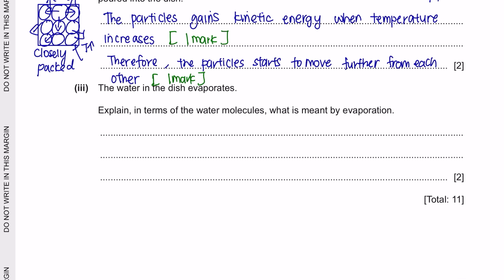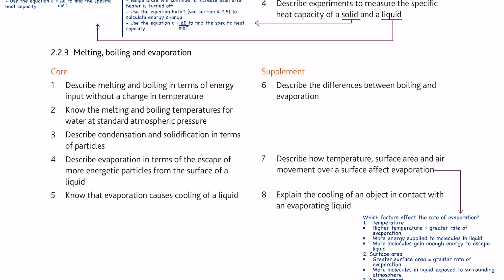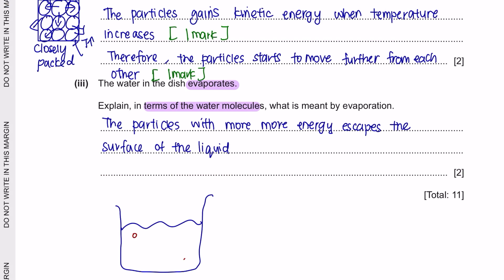Part 3: the water in the dish evaporates. Explain, in terms of water molecules, what is meant by evaporation. From the course specification, evaporation is described as the escape of more energetic particles from the surface of a liquid. So evaporation is when particles in the liquid that have more energy rise to the surface and, with sufficient energy, escape the surface to become gas.